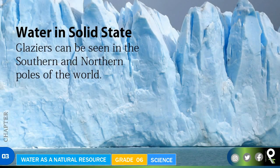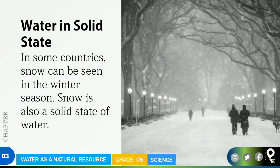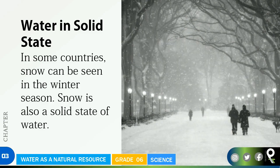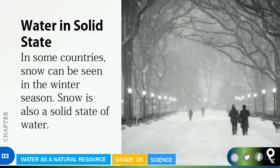I'm going to show that to you now. See, this is a glacier — definitely water in solid form. Glaciers can be seen at the southern and northern poles of the world. The ice has been there for a very long time — more than one thousand years — and it has become like a rock. It is very cold out there.